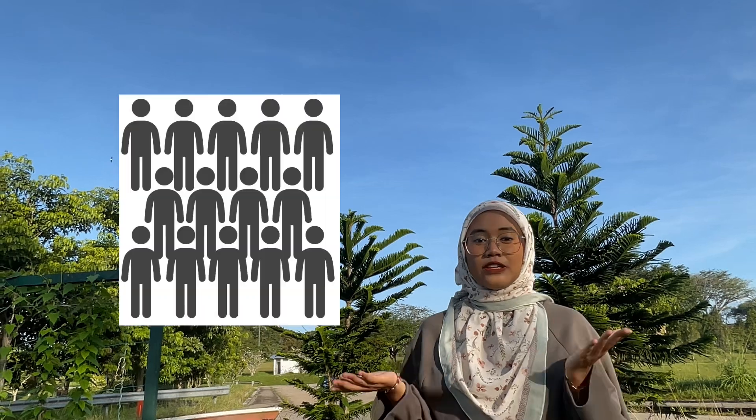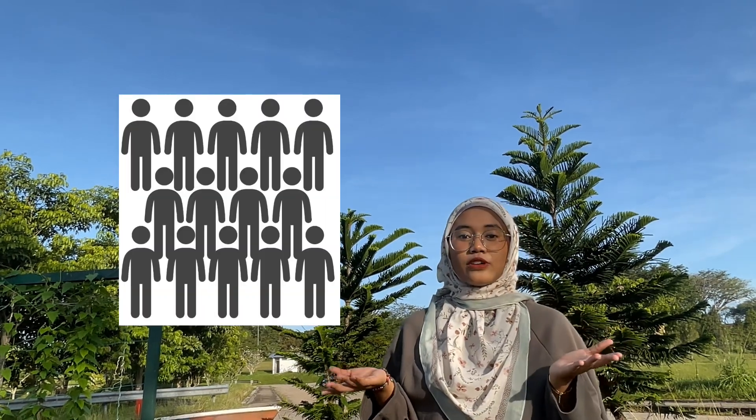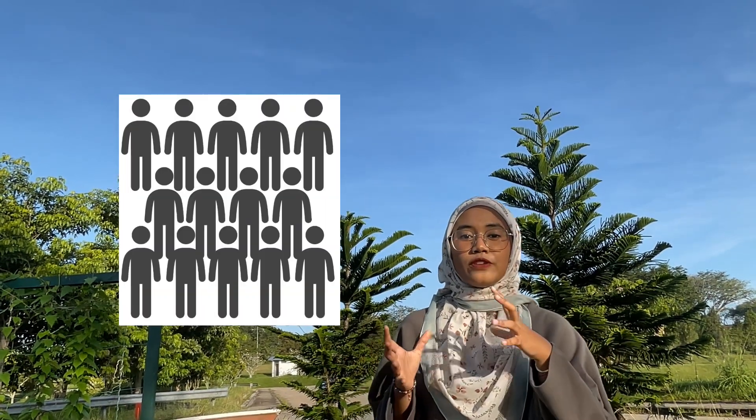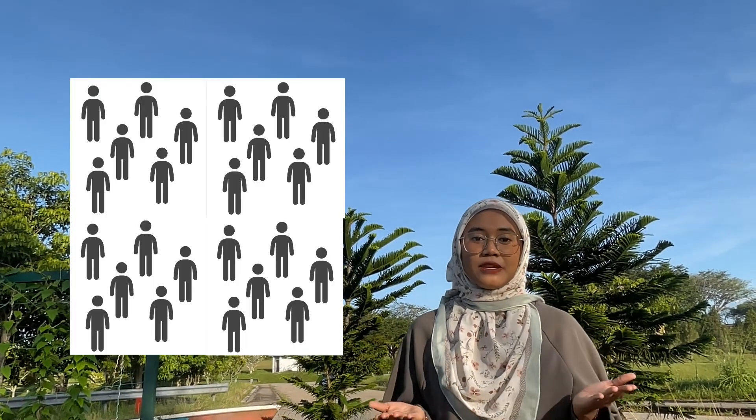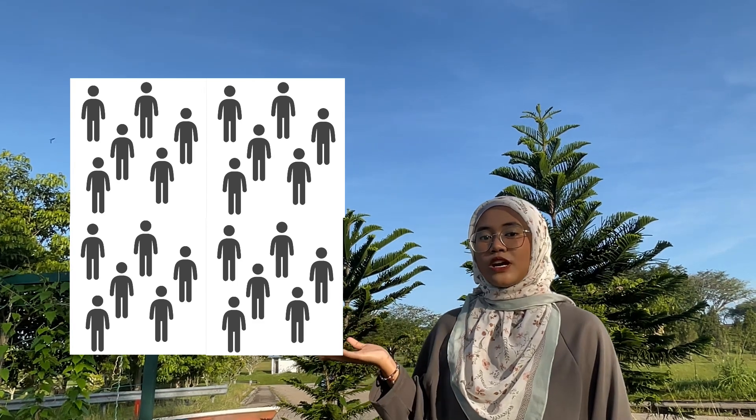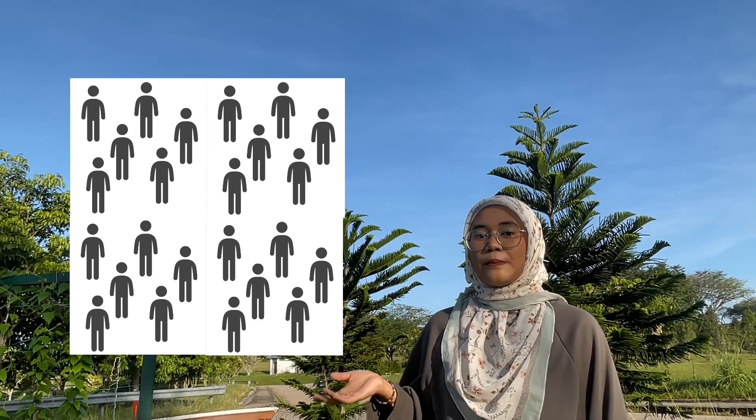Imagine you are at a party where people are crowded in one corner of the room. The room feels stuffy, so people start moving naturally towards the emptier spaces where it's less crowded. Over time, everyone spreads out evenly, making the room comfortable. This is Simple Diffusion — molecules move from where they are crammed together to where there's more space, until they are evenly distributed.